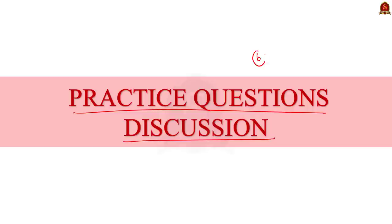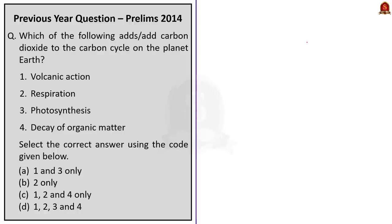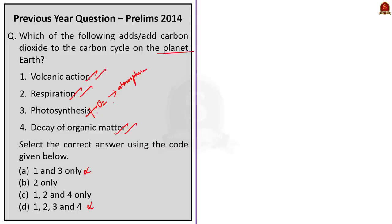Now let us move on to the practice prelims question discussion. We have six questions today — I will solve five and one is a quiz question for you. Question 1: Which of the following adds carbon dioxide to the carbon cycle on planet Earth? Options: volcanic action, respiration, photosynthesis, decay of organic matter. Photosynthesis releases oxygen, not carbon dioxide — so we can eliminate options containing it. Volcanic action, respiration and decay of organic matter all add carbon dioxide. The correct answer is option C: 1, 2 and 4 only.